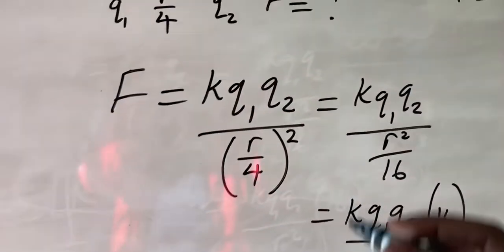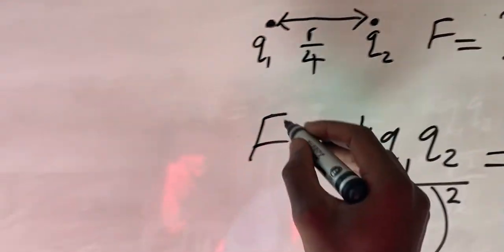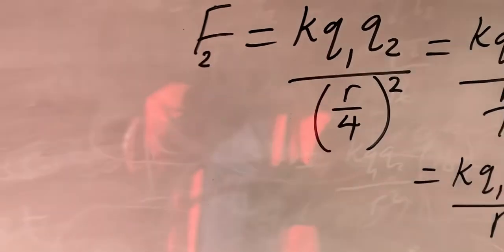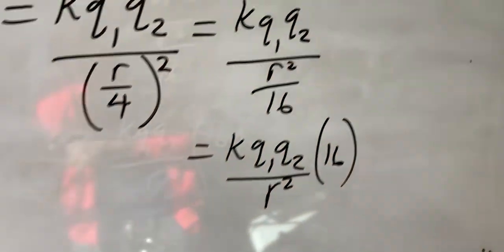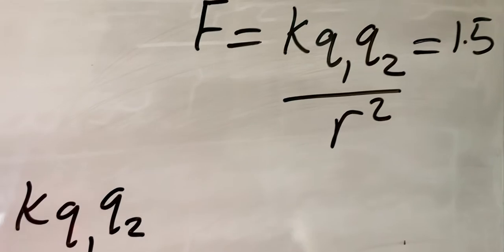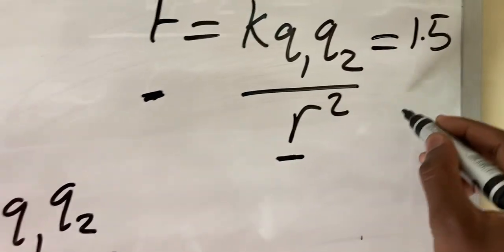So let's call this f1, the normal force, and then let's call the force after reducing the distance f2. So we have got the value of f2 being this. But what do we know? From this information here, we know that f is equal to this, which is also equal to this.